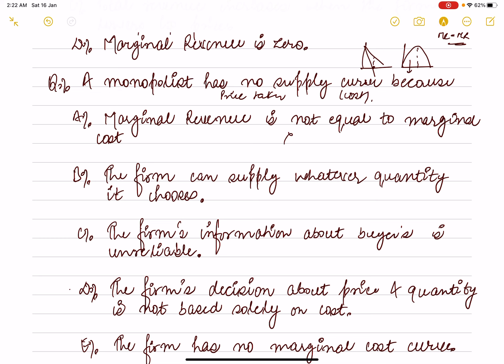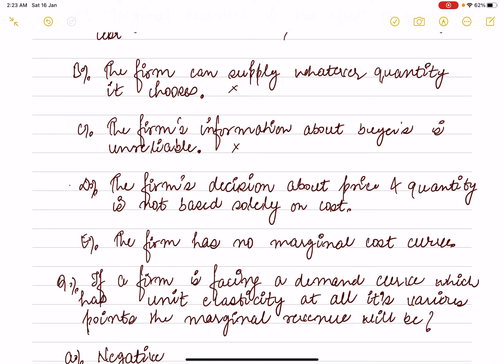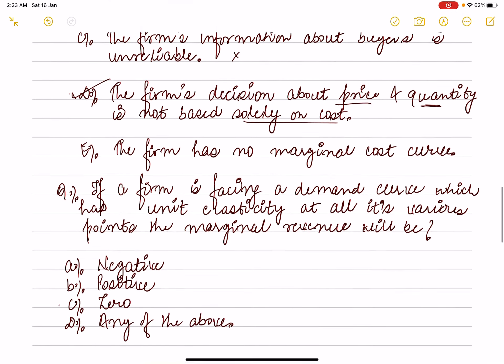So having no supply curve is not because total revenue equals total cost — that is wrong. The statement that the firm can supply whatever quantity it chooses is also wrong. The firm's information about buyers being unreliable is also not true. The correct answer is that the firm's decision is based on price and quantity, not solely on the basis of cost.